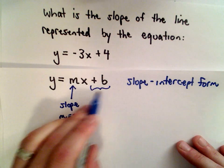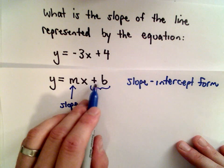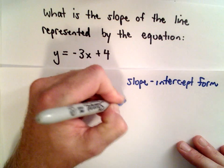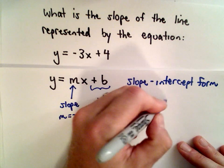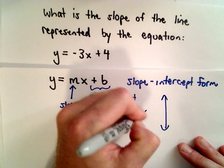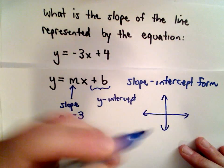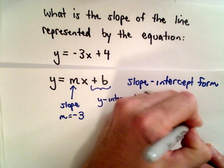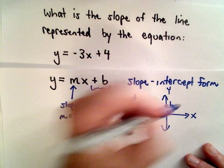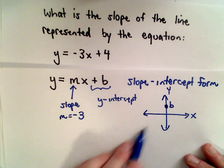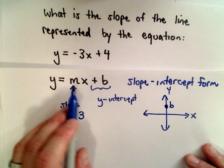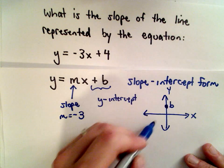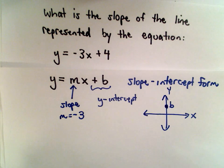Whatever number is hanging out over here, the whole number, it could be positive or negative, that's going to be the y-intercept. So that's going to be a number, if you go to graph it, it could be positive or negative. I'm going to make it positive, just to pick one. The value b is going to be where it goes through the y-axis. So if this was negative 3x plus 2, it would be going through the y-axis at the point positive 2.